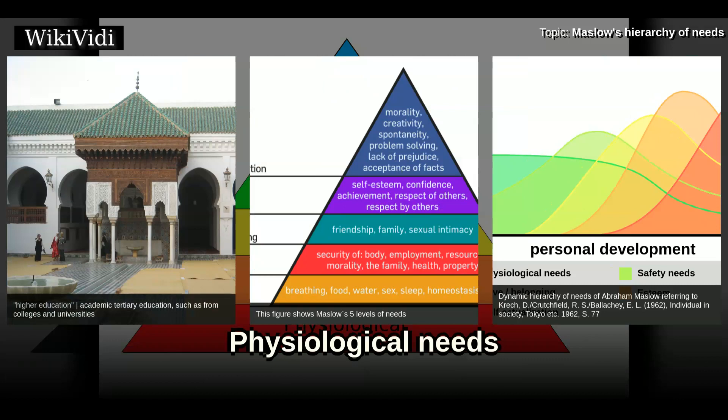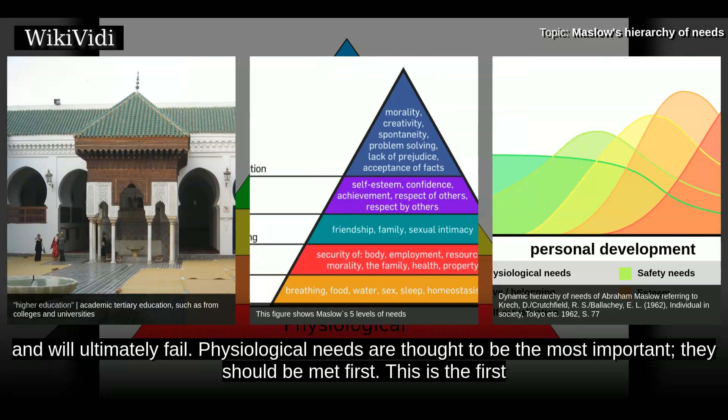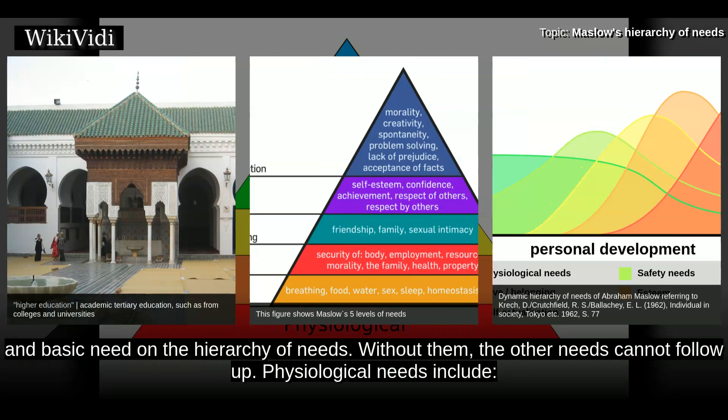Physiological needs are the physical requirements for human survival. If these requirements are not met, the human body cannot function properly and will ultimately fail. Physiological needs are thought to be the most important and should be met first. This is the first and most basic need on the hierarchy of needs. Without them, the other needs cannot follow.